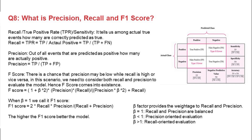Next question: what is precision, recall, and F1 score? Again, start with the confusion matrix. Recall is also known as true positive rate or sensitivity — it tells us among the actual true events, how many are correctly predicted as positive. Formula: true positive divided by actual positive (true positive plus false negative). Precision is with respect to the predicted: out of all events predicted as positive, how many are actually positive. Formula: true positive divided by (true positive plus false positive).